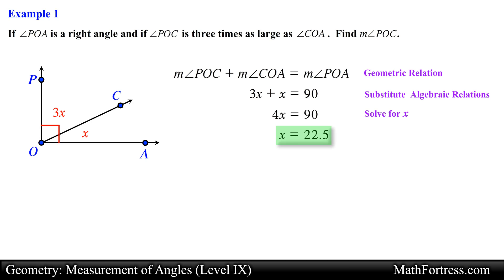We can now use this value to determine the measurement of angle POC. Substituting this value into the algebraic expression and simplifying, we obtain 67.5 degrees for the measurement of angle POC, and this is our final answer.